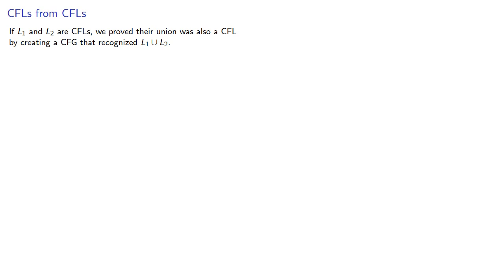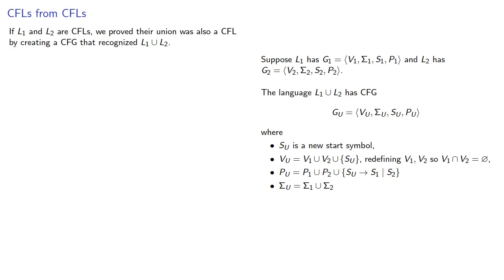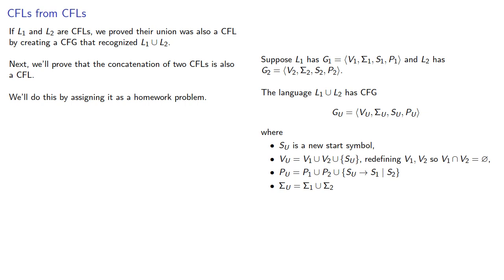If L1 and L2 are context-free languages, we proved their union was also a context-free language by creating a context-free grammar that recognizes their union. Next we'll prove that the concatenation of two context-free languages is also a context-free language. We'll assign this as a homework problem. The hint is: if SC is the start symbol of the concatenated language, we use the rule SC → S1 S2, the start symbols of the two languages being concatenated.